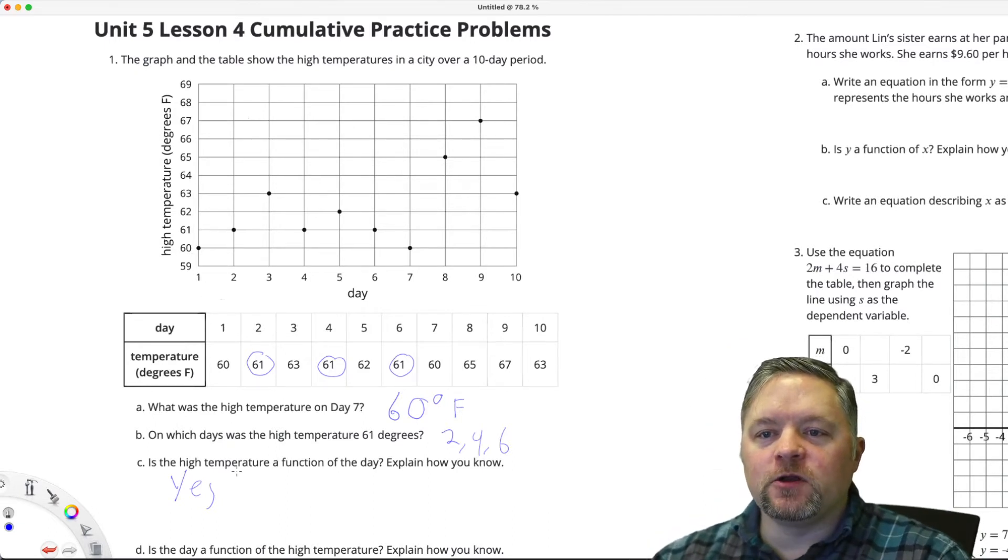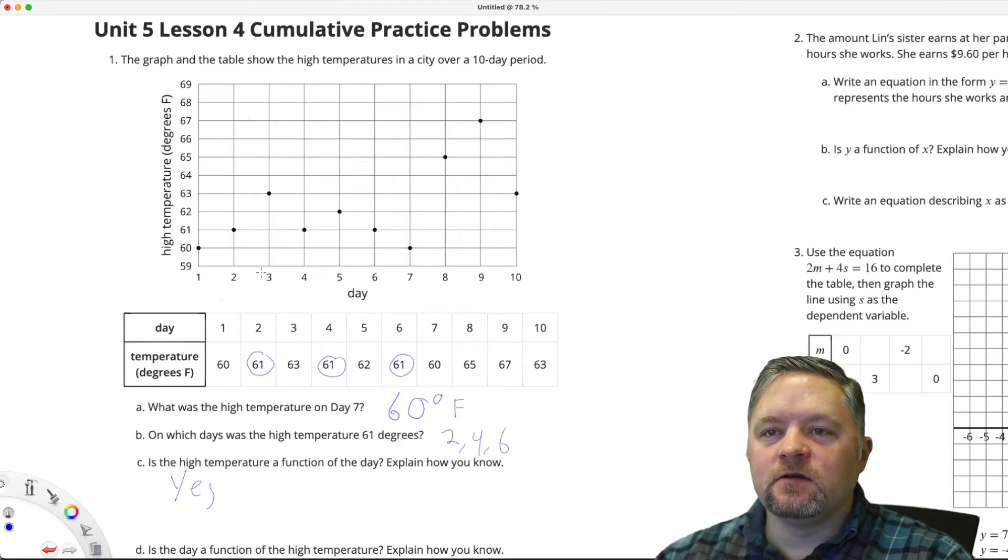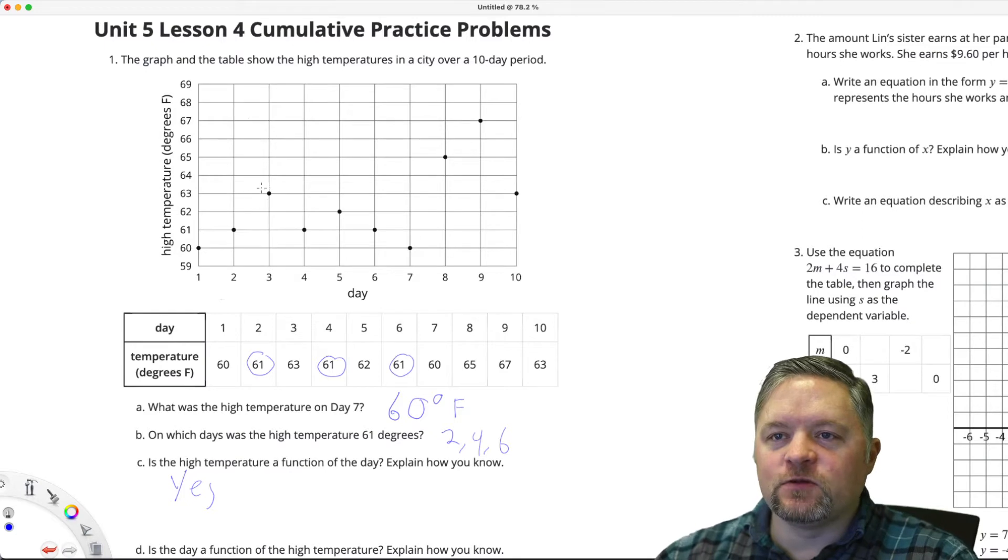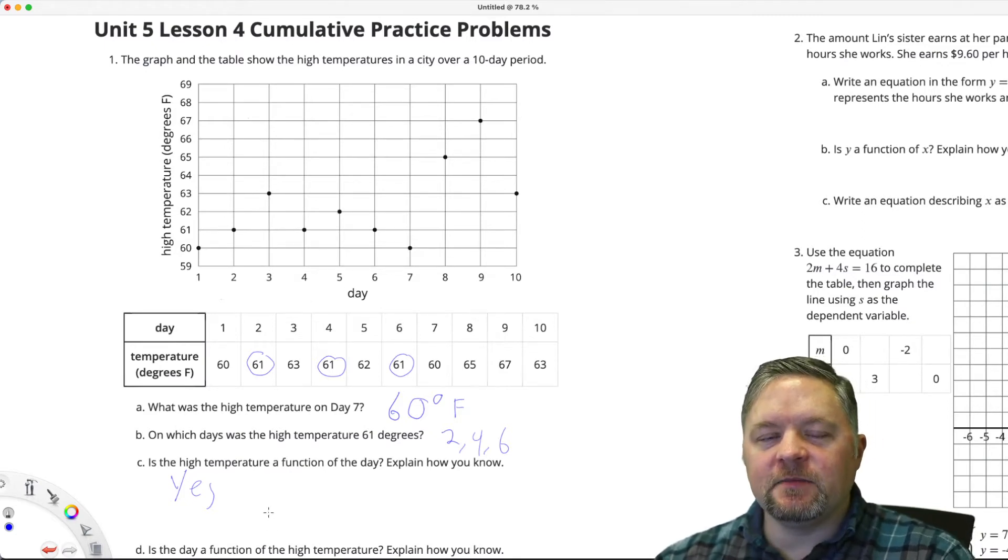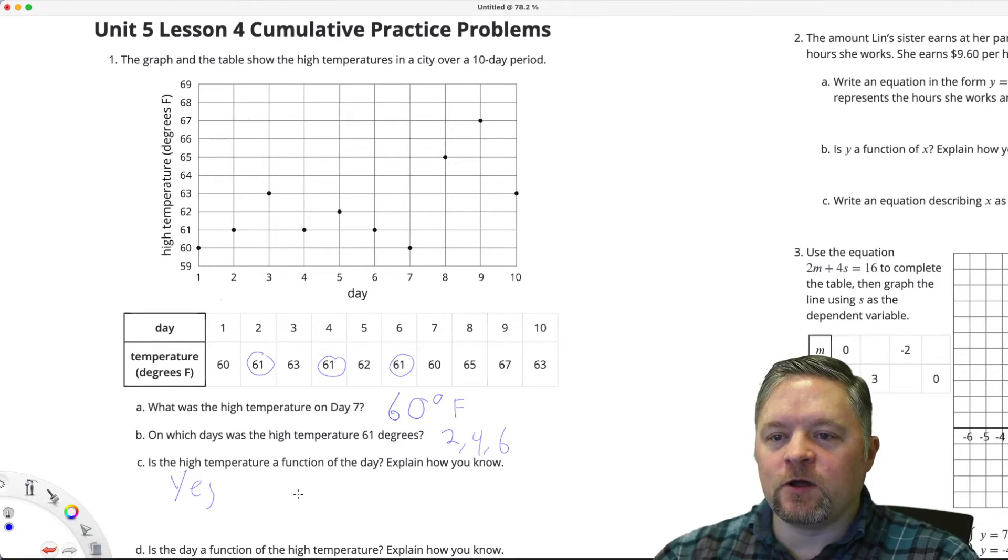If you put in a 2, you get out a 61. On day 3, there's only one possible high temperature. It was 63 degrees. That makes sense. On any day, there is only one possible high temperature. Every input has one output.